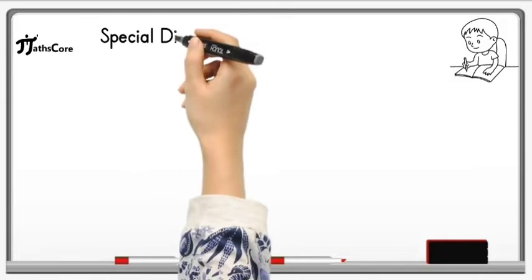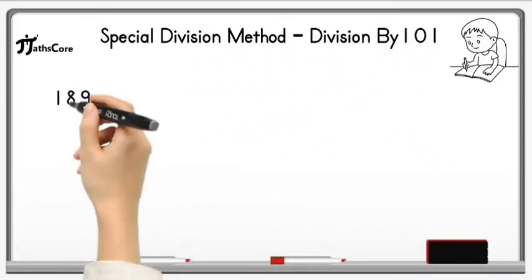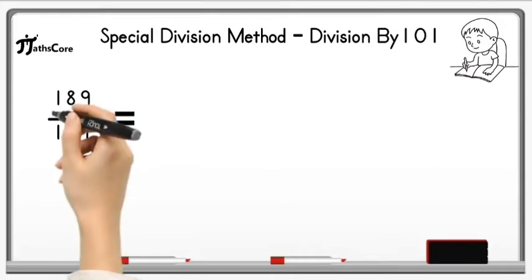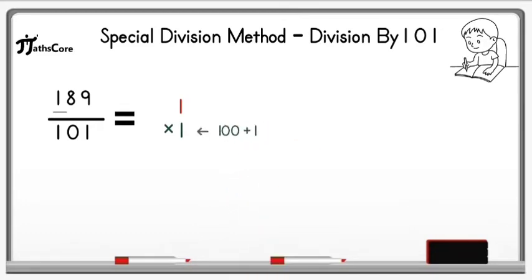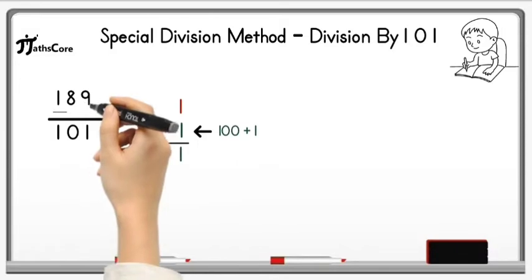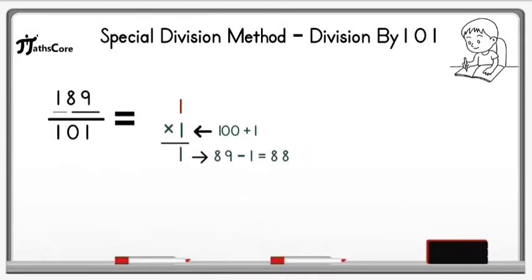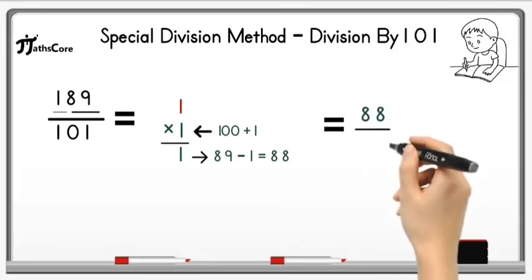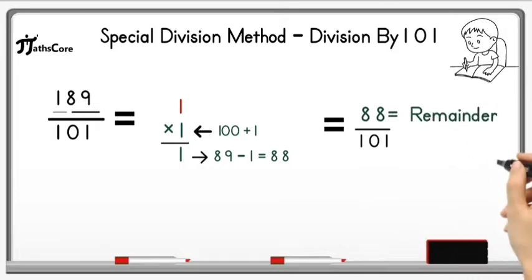Let's solve some examples on division by 101. The first example is 189 divided by 101. Write down 100 plus digit 1 here and multiply it by 1, because if we add 1 to 100 we get 101. So 1 multiplied by 1 is equal to 1. Now subtract this 1 from 89: 89 minus 1 is equal to 88. Now divide 88 by 101 — it is not possible because 88 is less than 101. So 88 is the remainder and 1 is the quotient.